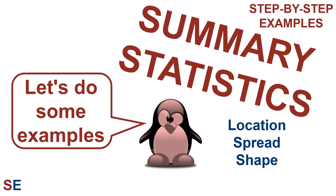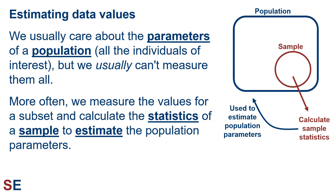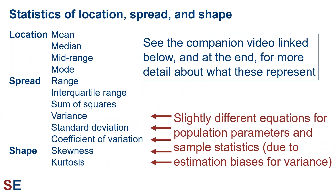Let's look at some step-by-step examples of calculating summary statistics for the location, spread, and shape of a data set. When we're estimating data values, we usually care about the parameters of a population — that is, all the individuals of interest — but we usually can't measure them all, so more often we measure the values for a subset and calculate the statistics of a sample to estimate those population parameters. There are four location statistics, six spread statistics, and two shape statistics.